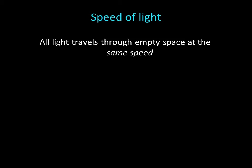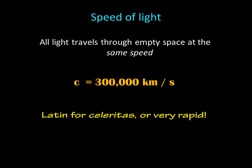All light travels through empty space at the same speed. The speed of light is about 300,000 kilometers per second. We represent the speed of light with the letter C. It stands for the Latin celeritas, or very rapid.